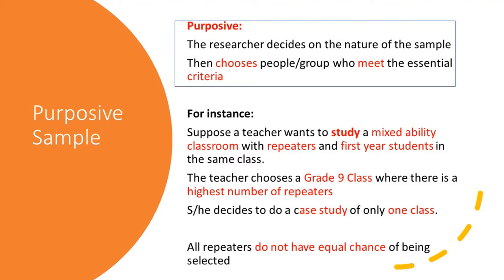The next technique of non-random sampling is purposive sampling. In a purposive sample, the researcher decides on the nature of the sample, then chooses the people or group who meet the essential criteria. For instance, suppose a teacher wants to study a mixed-ability classroom with repeaters and first-year students in the same class. She may decide to choose a grade 9 class where there is the highest number of repeaters and do a case study of only one class. Obviously, all repeaters do not have equal chance of being selected.